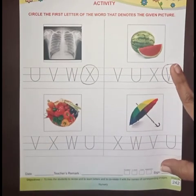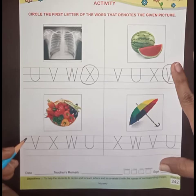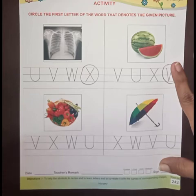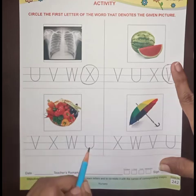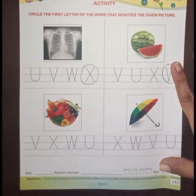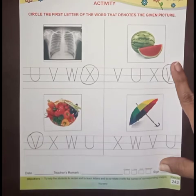What is this? Tell me. This is a vegetable. These are vegetables. So, vegetables come from which letter? From letter V. Where is V? This is V? No. This is V? No. This is V? No. This is V? Yes. Then we have to circle the letter V.